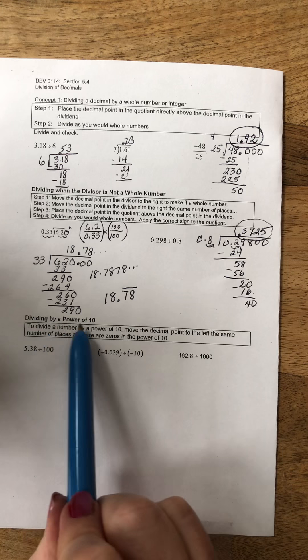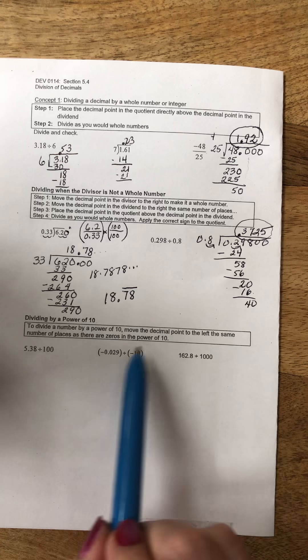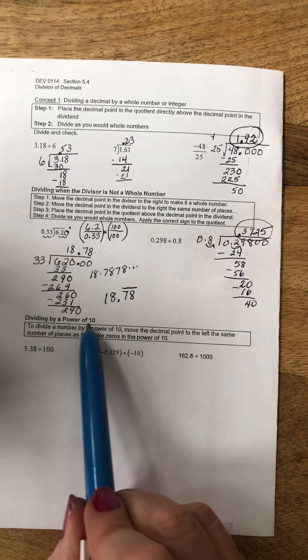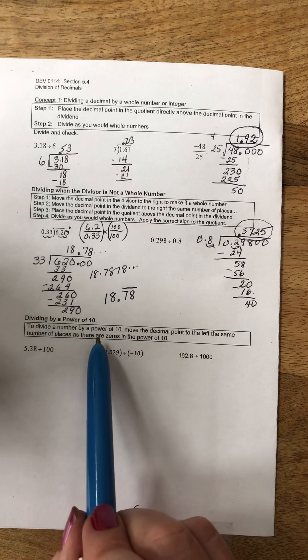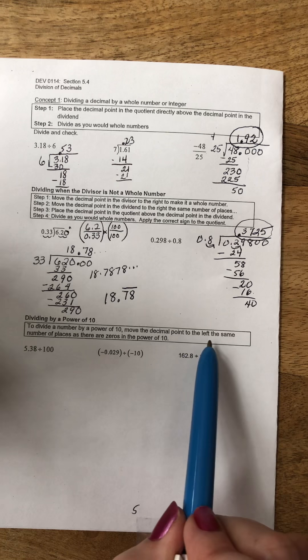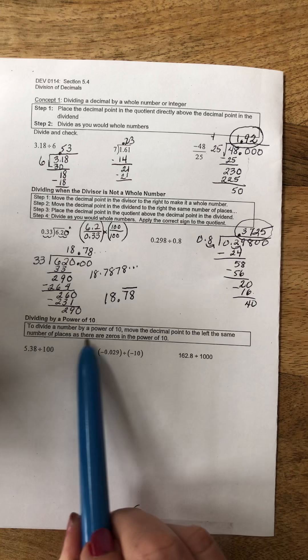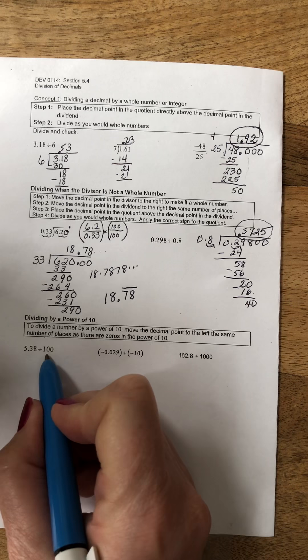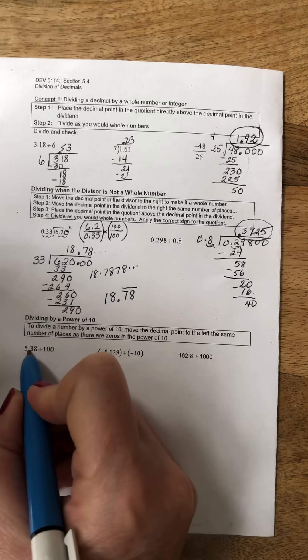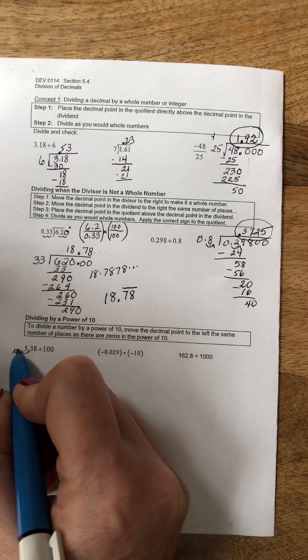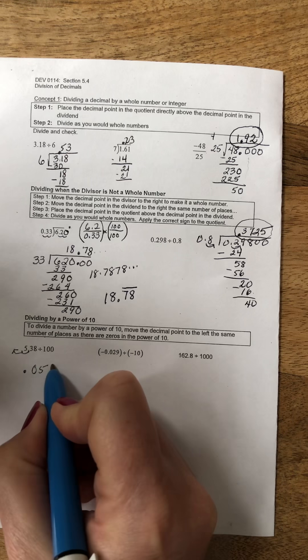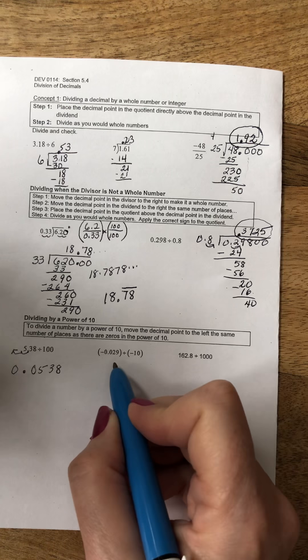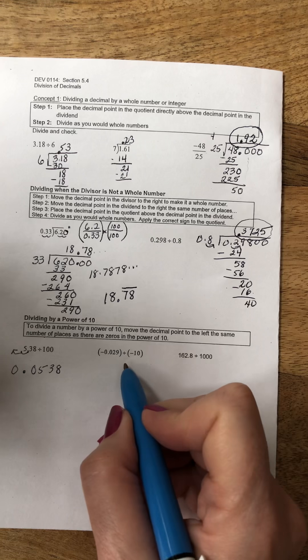Last we're going to divide by powers of 10 using a shortcut similar to the one we did with multiplication of powers of 10. When we divide by a power of 10, we move the decimal point to the left the same number of places as there are zeros in the power of 10. So when I divide by 100, I simply move my decimal point two places to the left.